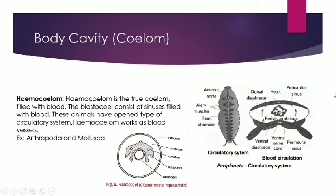Haemocoelom refers to organisms in which a true coelom is present filled with blood. The blastocoel — the body cavity — consists of sinuses, which are cavities present within a bone or other tissue, especially in the bones of the face or skull connecting with nasal cavities. Animals with haemocoelom have an open circulatory system. The haemocoelom works as a blood vessel, functioning in the transportation of blood from one body part to another. This arrangement is generally found in arthropods and mollusca.